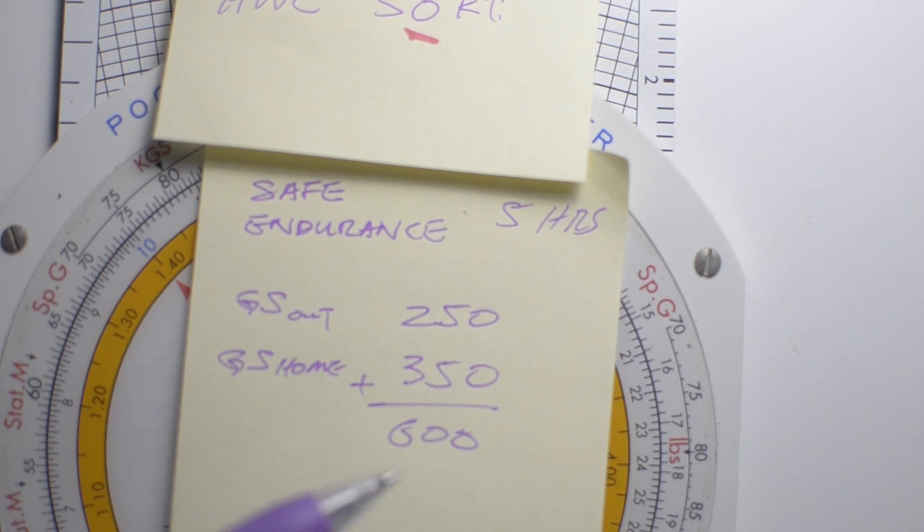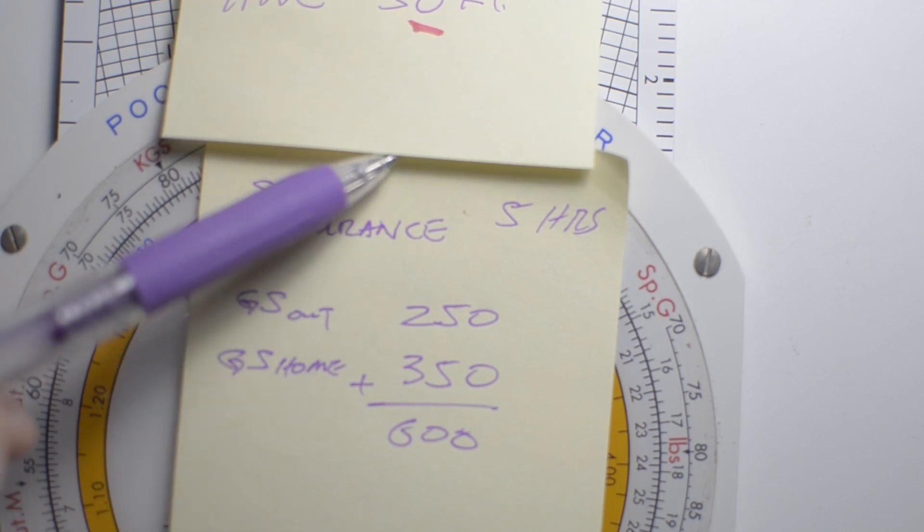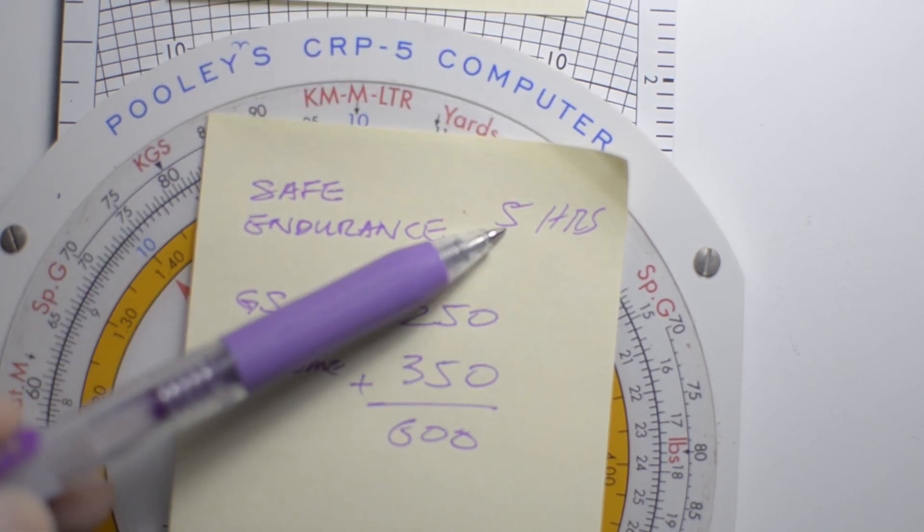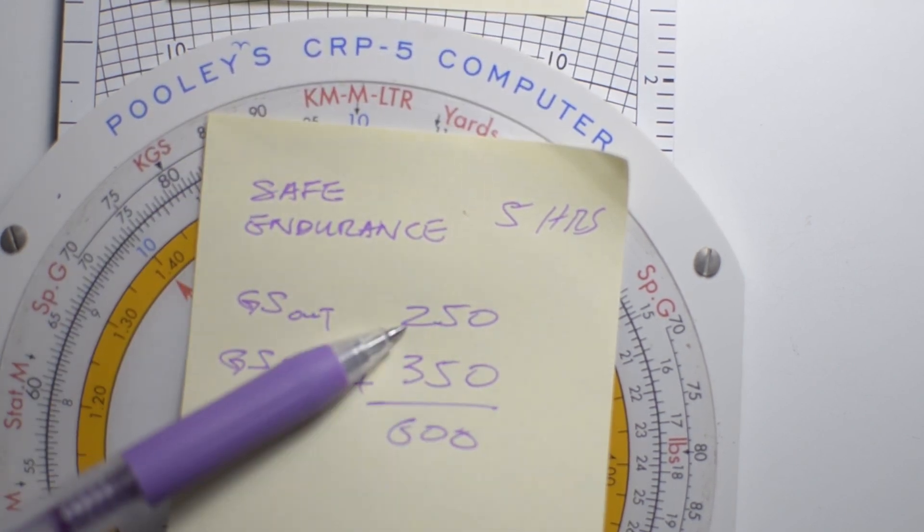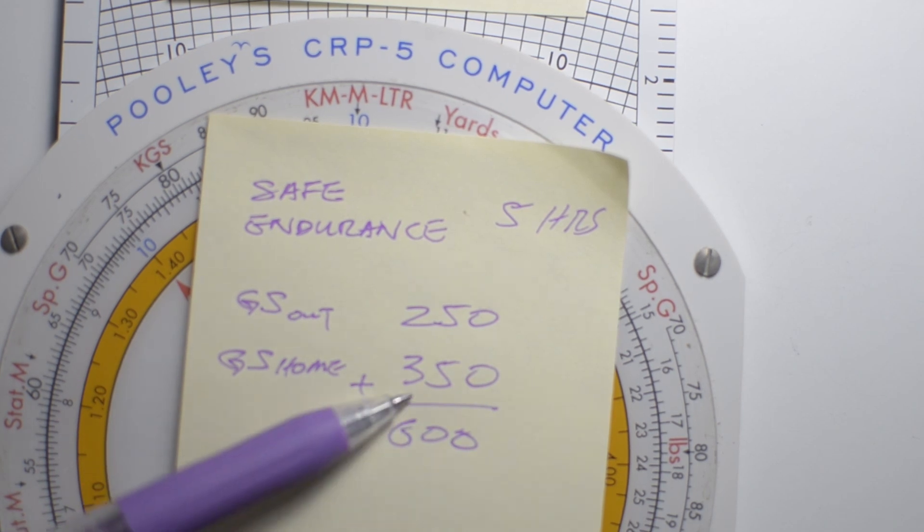Now why is this important to us? Well, we need to know 5 hours, we need to know 250, we need to know 350, and we need to know that 250 and 350 add up to 600,